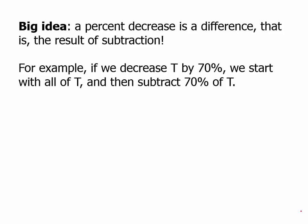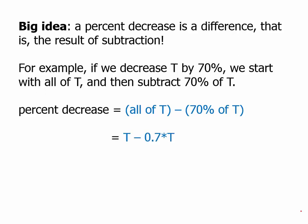For example, if we decrease T by 70%, we start with all of T and then subtract 70% of T. So the percent decrease equals all of T minus 70% of T. All of T, that's just T. To find 70% of T, we change 70% to a decimal, 0.7, and multiply it by T. So this is going to be T minus 0.7 times T.